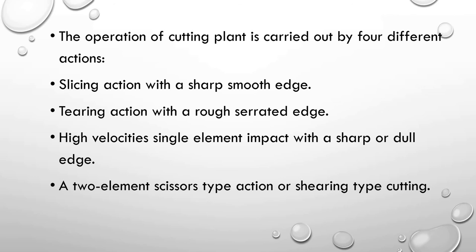The operation of cutting plant material is carried out by four different actions: slicing action with a sharp smooth edge, tearing action with a rough serrated edge, high velocity single element impact with a sharp edge, and two-element scissor-type action or shearing-type cutting.